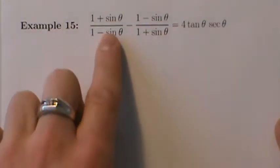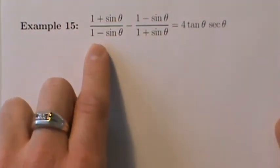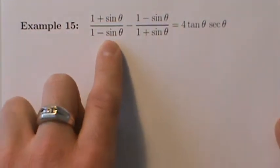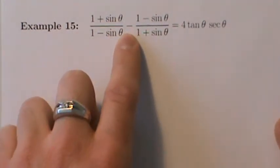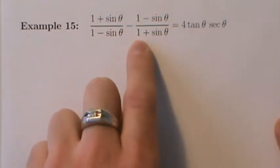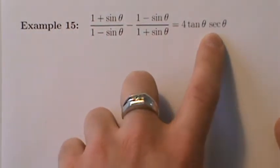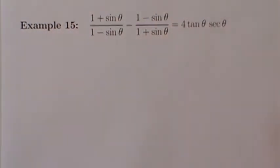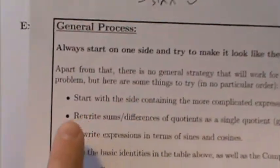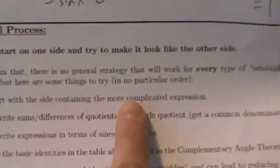So: (1 + sinθ)/(1 - sinθ) minus (1 - sinθ)/(1 + sinθ) equals 4tanθ secθ. Let's go back to our general process from an earlier video — always start on one side, try to make it look like the other side, and usually start with the more complicated side.